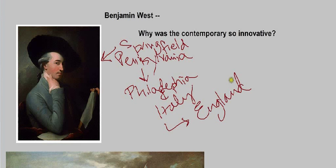He was really successful. He helped to found the Royal Academy in England and later became its president after Reynolds, who we've already looked at. He also earned the patronage of King George III — you can't really get more successful than that in terms of having really important, powerful, wealthy patrons. He's kind of sort of American and sort of British, which makes him really interesting.